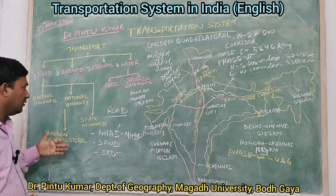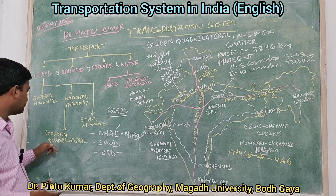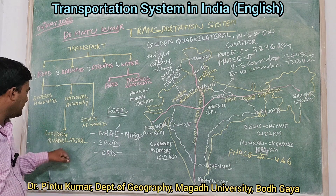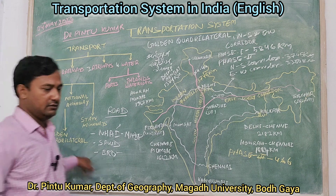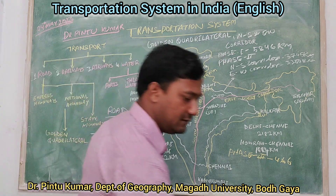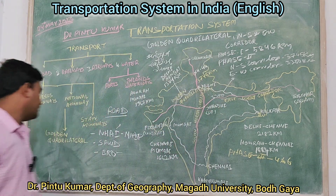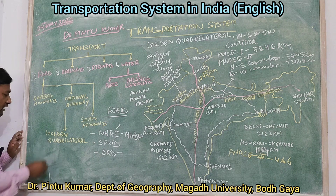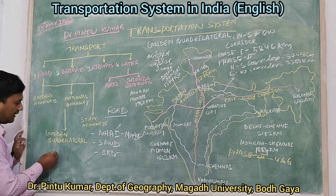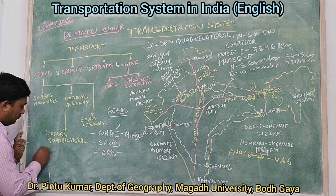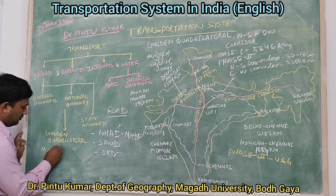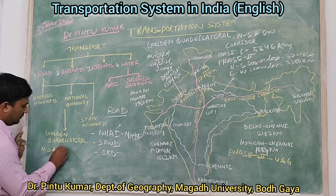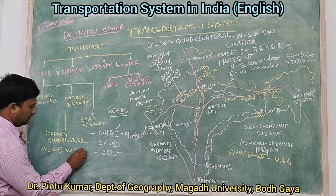The national highways are also characterized by the Golden Quadrilateral, which is one of the most important and largest road projects in India. Also included are the North-South and East-West corridors.